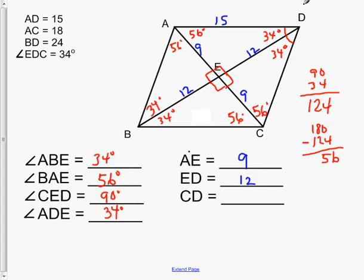And then CD, well all the sides on a rhombus are the same. So this one's got to be 15, just like this one's 15. So CD would be 15.